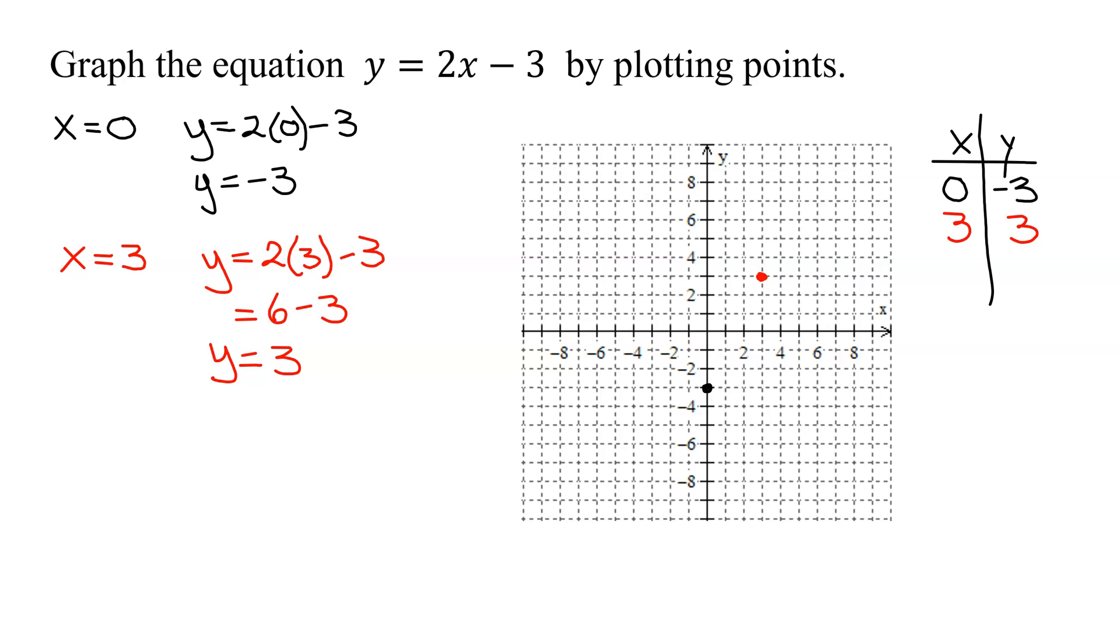Now all we need is one more point. I could pick another value over here. I always like to have some on the left and some on the right of the origin. So I'm just going to pick x equals negative 3. So y equals 2 times x, which is negative 3 in this case, minus 3. 2 times negative 3 is negative 6, minus 3. So what's my y value? Negative 6 minus 3 is negative 9.